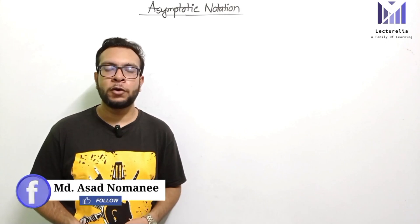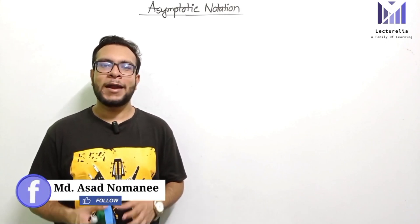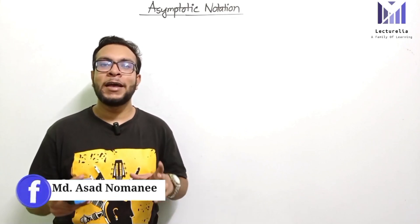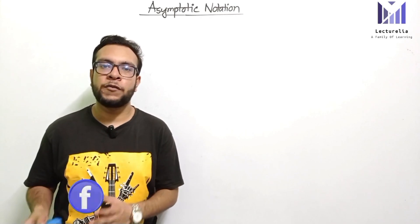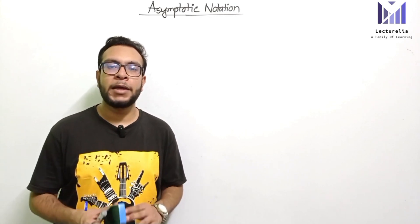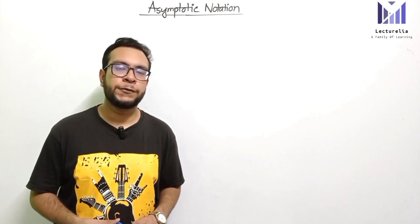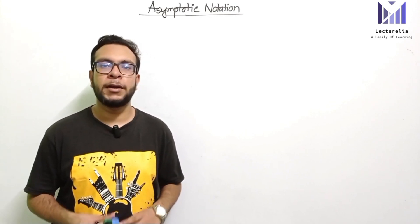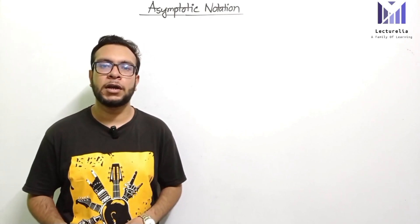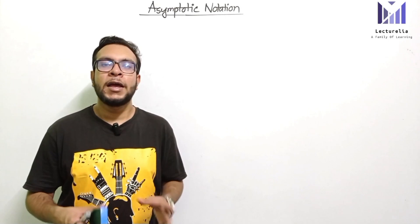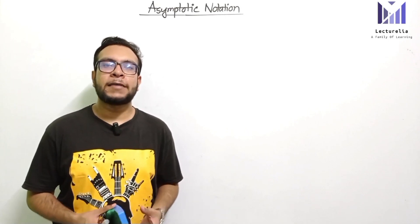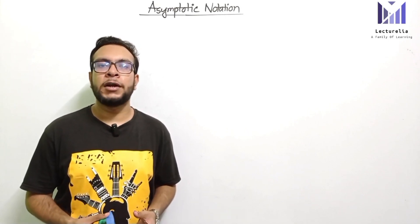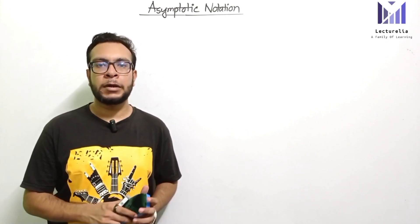First of all we go to Big O notation. Next is Big Omega, and third is Theta notation. We have seen our last video, and now we will see asymptotic notation related examples in this video.